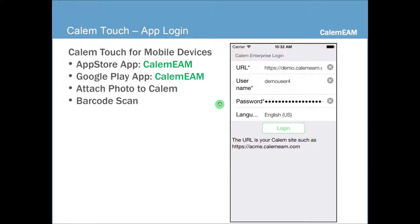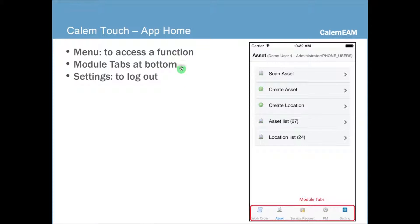If you're using Calum Touch, you can install it for iPhone and iPad from Apple's App Store. For Android devices, you can install from Google Play. Once you launch the app, the login screen is shown where you can enter your full URL as the service address, username, and password, and optionally pick your language and locale, then log in. With Calum Touch, you can use native device features like attaching a photo or doing a barcode scan. Once logged in, you can use the menu to access functions such as scanning an asset, creating an asset, creating a location, or switching tabs at the bottom. For example, you can go to the settings tab and log out from there.